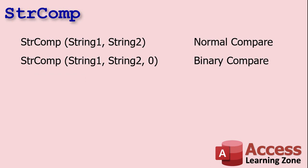StrComp takes two or three bits of data. String one and string two by themselves will give you a normal comparison — that's what Access usually does, so it ignores capitalization. Capital Jim Kirk and lowercase Jim Kirk are basically the same thing. If you add a third parameter with a zero in it, it'll do what's called a binary compare. Binary means it's going to check the ASCII code values of each character and they have to be identical.